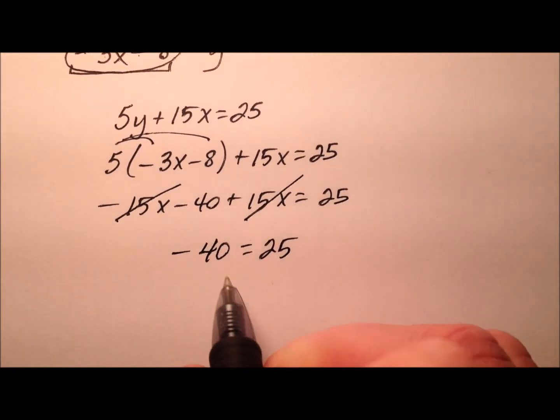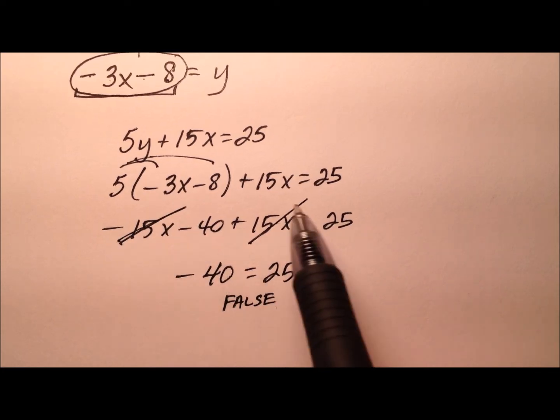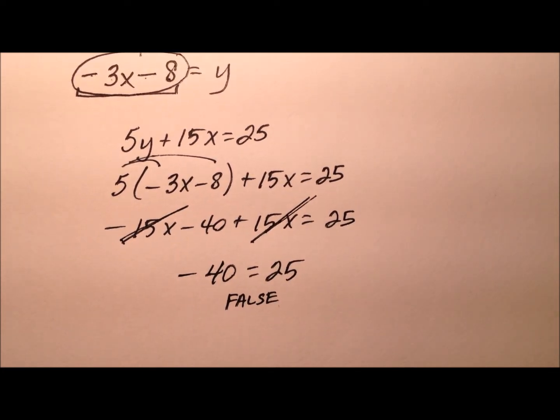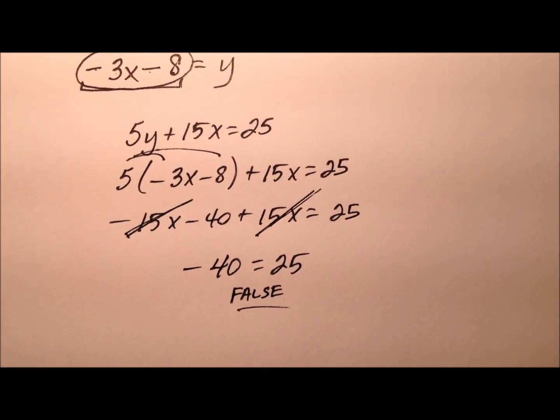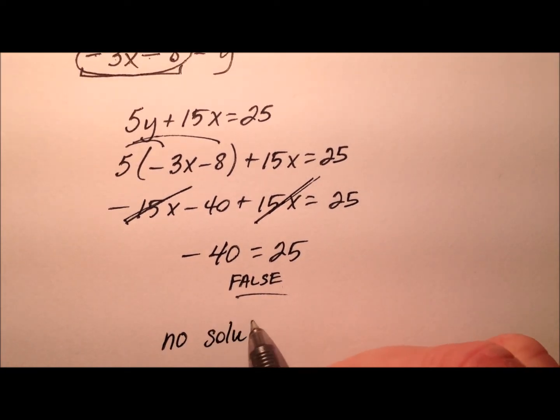Well, this seems like a false statement. This is not true at all. Negative 40 does not equal 25. So what happened here is that all of my variables canceled. I'm left with a false statement. So what does that mean? It means this system has no solution.